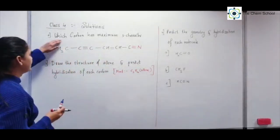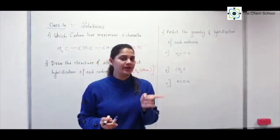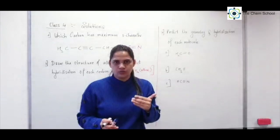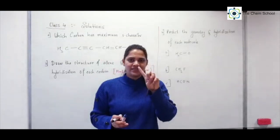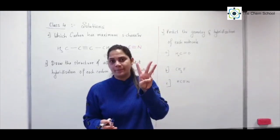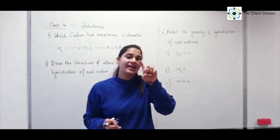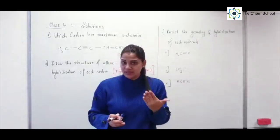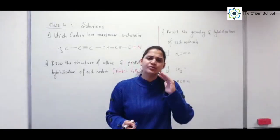Now, which carbon has maximum s-character? Remember the trick: the fewer p orbitals relative to s, the higher the s-character. In sp hybridization, s-character is 50%. In sp2, it is 33.33%. In sp3, it is 25%. So when hybridization is sp, the s-character is maximum. sp hybridization occurs when there are maximum pi bonds — so wherever pi bonds are maximum, that carbon has maximum s-character.